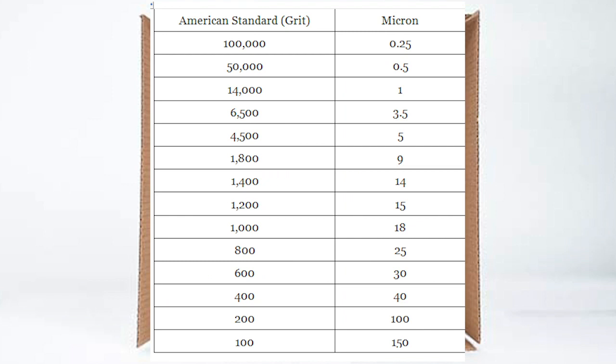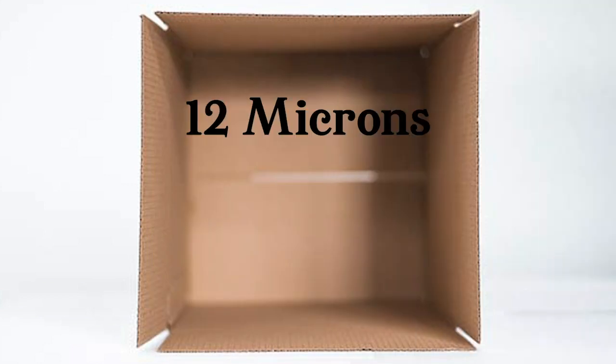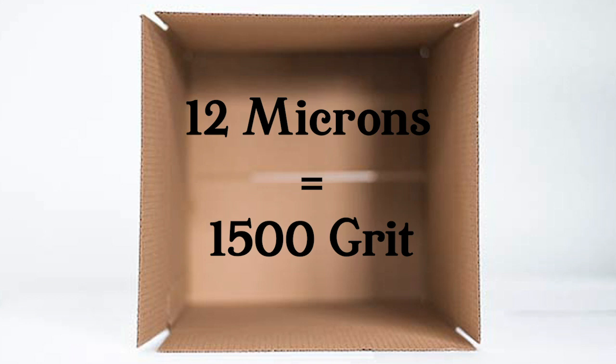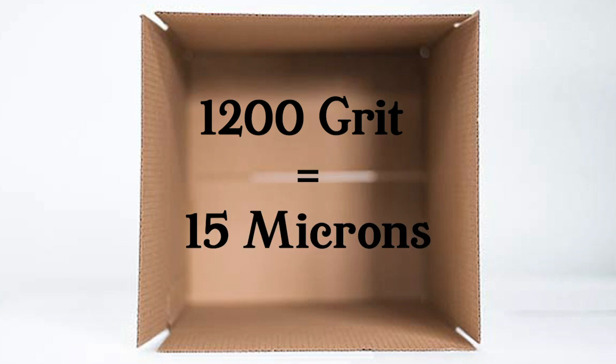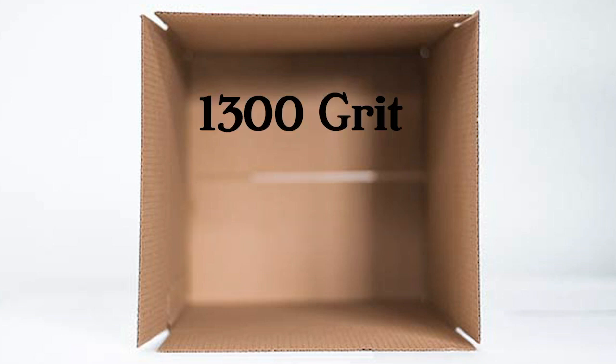Tom confuses me a little by listing his laps in microns instead of grit, which is just another way of talking about the diamond content. 12 microns is about the same as a 1500 grit lap. Now I'm replacing a 1200 grit lap, and that would equate to 15 microns. A 1300 grit lap would equate to 14 microns.